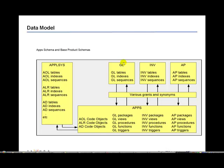The tables stored within the product schema all grant access to the app schema. The app schema acts as a hub-and-spoke model. Instead of having a spider web, Oracle has created an app schema which acts like a hub and spoke model. All the product schemas primarily grant access to the app schema so that the app schema can select, insert, delete, and update all the base tables within the product schemas.